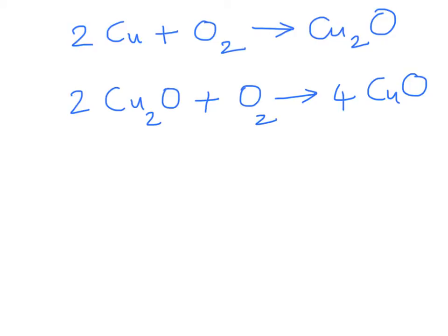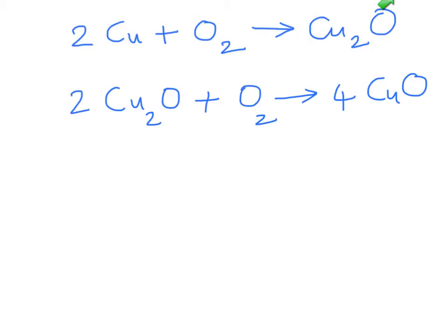First, the copper reacts with the oxygen in the air to form copper oxide. This copper oxide further gets oxidized to form copper oxide. Copper oxide is kind of like a reddish color and copper oxide has a blackish color.